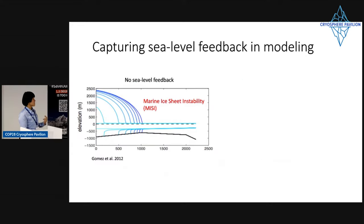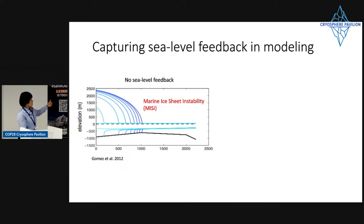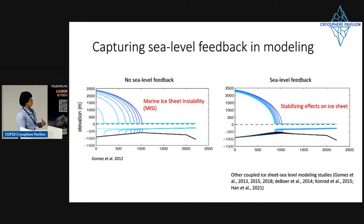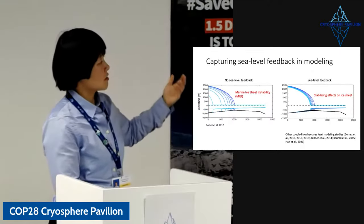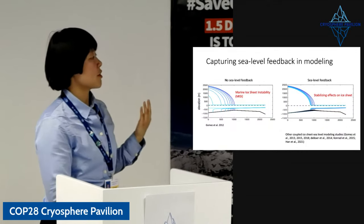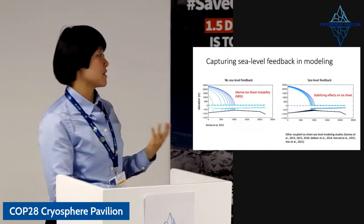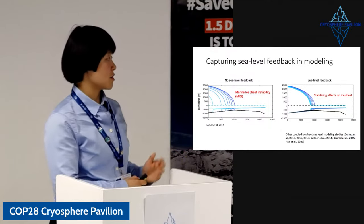This is a demonstration using a simple model: when there is no sea level feedback or GRD feedback on a marine-based ice sheet on a retrograde bed slope, the ice sheet experiences a runaway effect — going from the large ice sheet in blue all the way down to the light blue. This is what's called marine ice sheet instability. On the other hand, when one incorporates sea level feedback, the local sea level falls and acts as a stabilizing factor, and you can see the ice sheet does not go through the runaway effect. This has been shown in the last decade by numerous numerical modeling groups across the world.